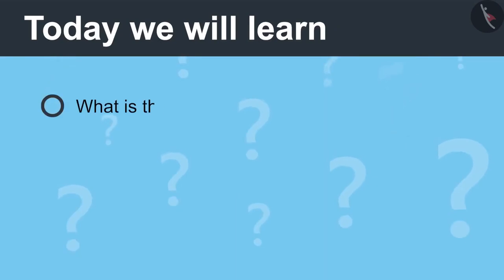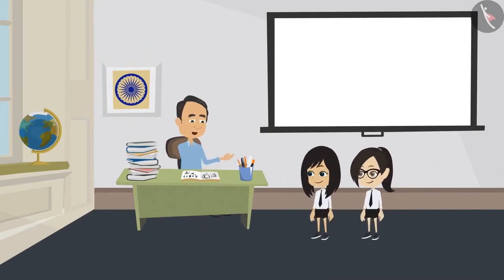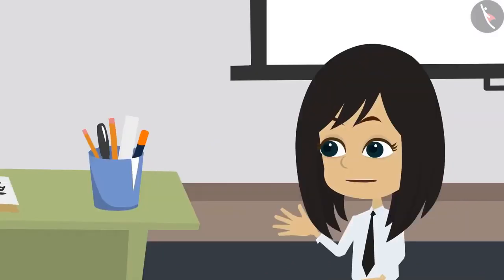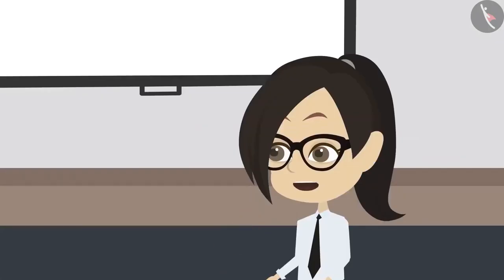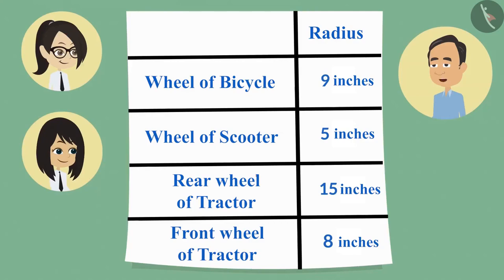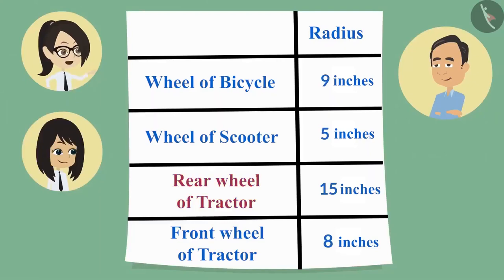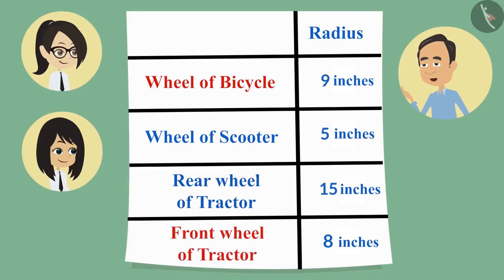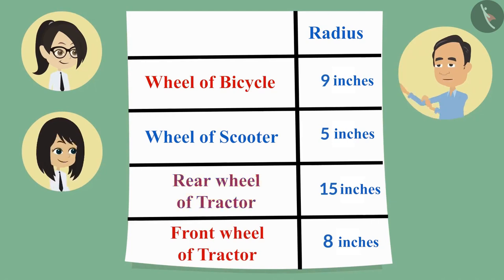Today we will learn the relation between radius and circle. The teacher asks if the students succeeded in measuring the wheels. They confirm they measured all four wheels by finding the radius of each. The teacher reviews their measurements and asks which wheel had the largest circle. The students identify the rear wheel of the tractor as the largest, because they physically saw it.